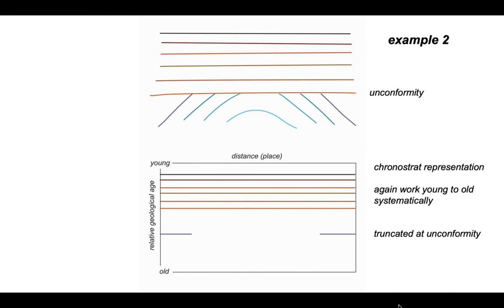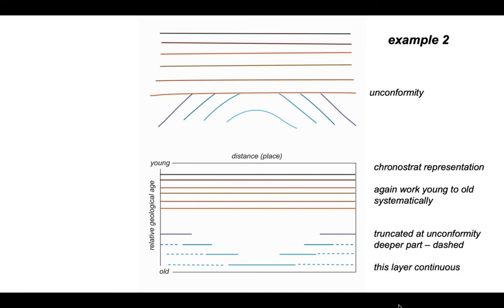Beneath the unconformity, the rocks within the fold terminate against it, so they don't extend all the way across the diagram. Let's plot these in systematically, working to deeper rocks and moving into the core of the antiform. The deeper parts, which represent the extreme left and right of the chronostrat diagram, are not shown on the cross-section — not because they don't exist geologically, but because the cross-section is terminated downwards. Dashed parts on the chronostrat diagram represent areas not illustrated, not areas that don't exist in the subsurface.